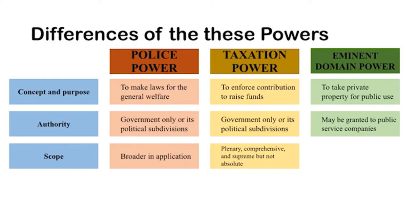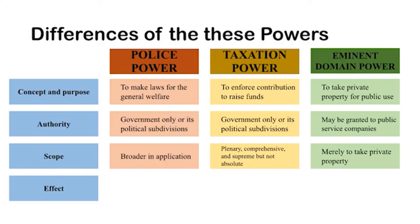Eminent domain power is merely focused on taking private property. If funds are needed to compensate the owner, they will come from the funds collected through the exercise of taxation power. As to effect, police power is to make laws for the general welfare, while taxation power takes money to support the government.